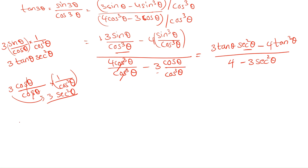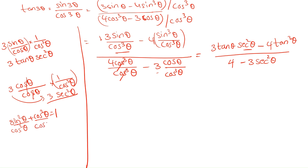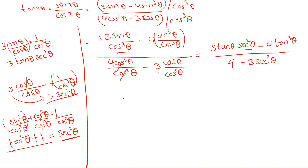Now we substitute for sec²θ. From the identity sin²θ + cos²θ = 1, dividing both sides by cos²θ gives tan²θ + 1 = sec²θ. So sec²θ = 1 + tan²θ. Substituting this: the numerator becomes 3 tan θ(1 + tan²θ) − 4 tan³θ, and the denominator becomes 4 − 3(1 + tan²θ).